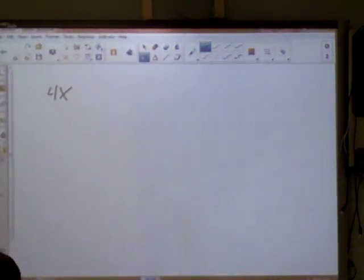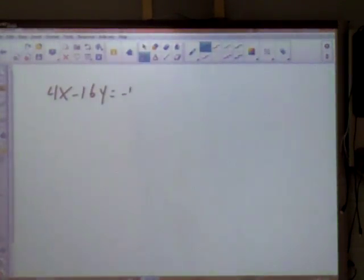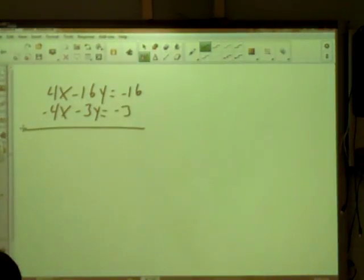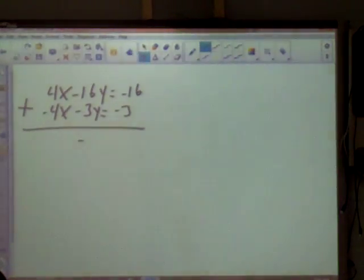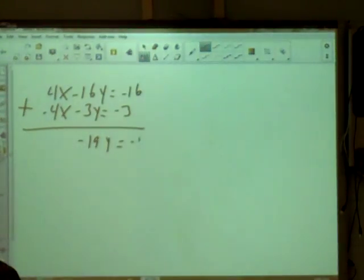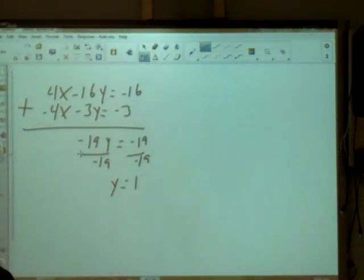It got me 4x minus 16y equals negative 16. I'm going to multiply the top equation by 4 there. In the bottom one, I got negative 4x minus 3y equals negative 3. So now my 4x's are different signs, so I'm adding. 4x to negative 4x is nothing. Negative 16y plus negative 3y is negative 19y, and negative 16 plus negative 3 is negative 19. So when you divide it by negative 19 to solve for y, your y was 1.